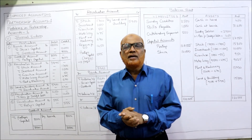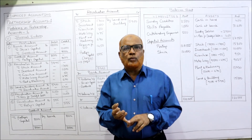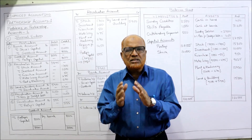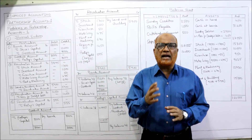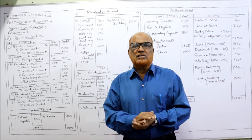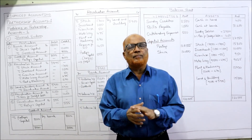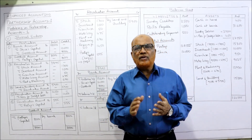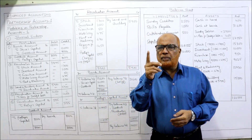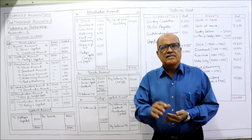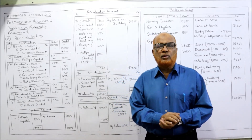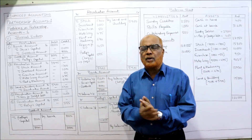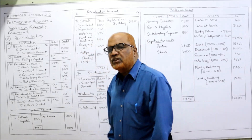In this topic, Partnership Account Part 1, we are going to do problems on calculating the profit sharing ratio, the different methods of maintaining capital accounts, and the adjustments to be made when a new partner is admitted, when an old partner retires, or on the death of a partner. If you have not watched the earlier videos, I suggest you go to the playlist, select Advanced Accounting New, and watch the partnership videos to be perfect on the concepts.